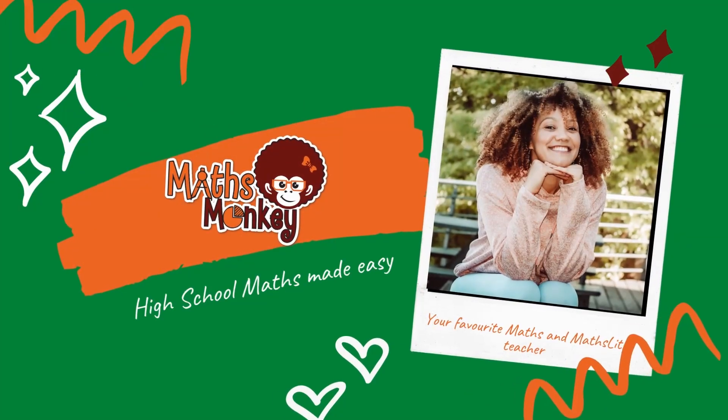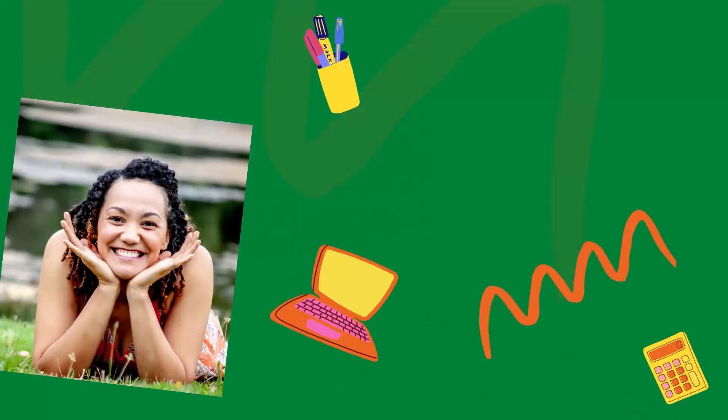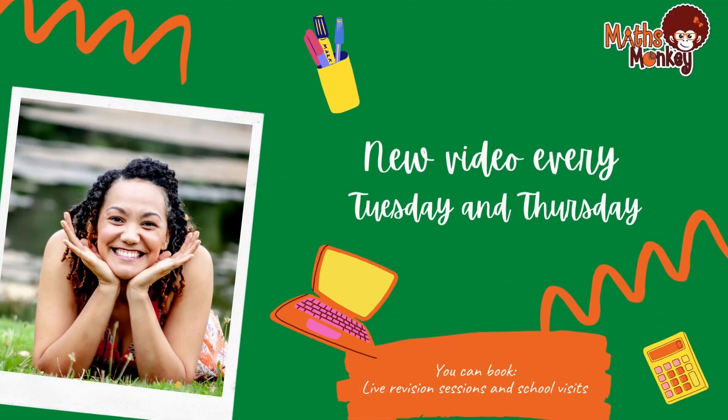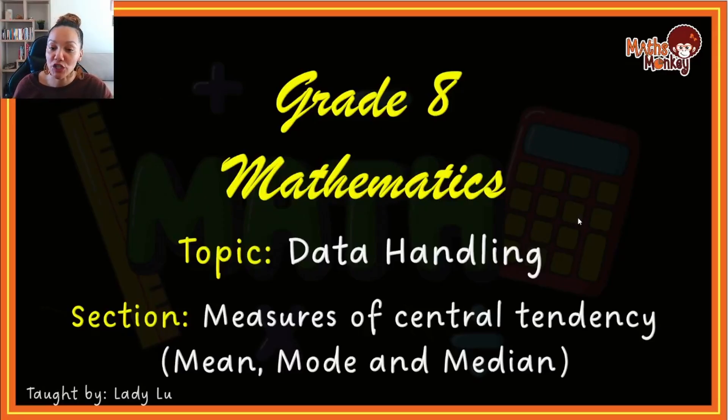Let me teach you about measures of central tendency. Before we start, let me just explain what this is. Measures of central tendency means if I have a data set, there's different ways of looking at what is the middle, what is the average, what deductions can I actually make from this data. The mean, the mode, and the median are three ways to see the measures of central tendency of a specific data set. Now I'm going to teach you how to calculate each.